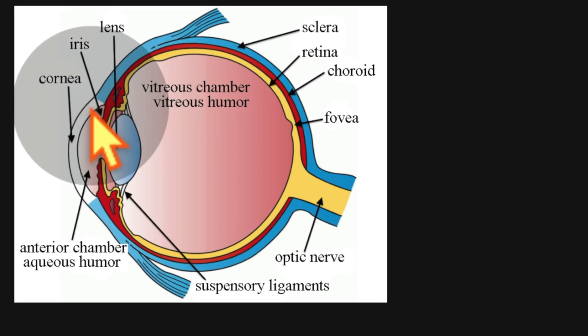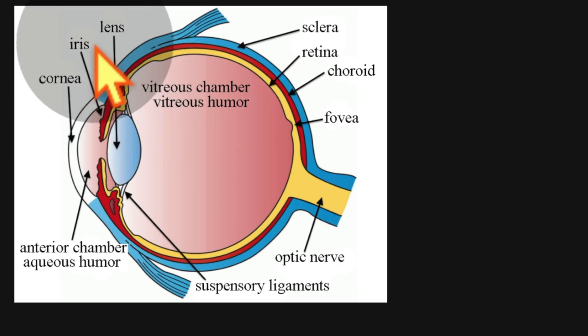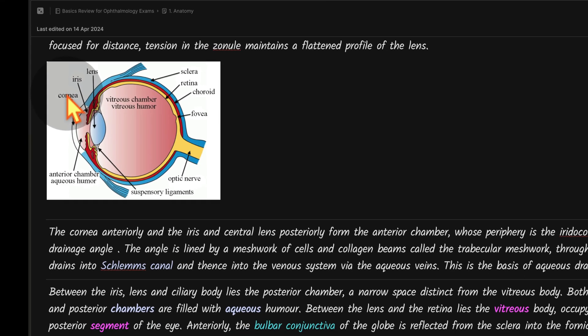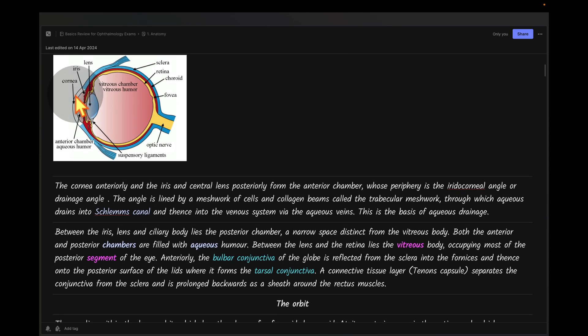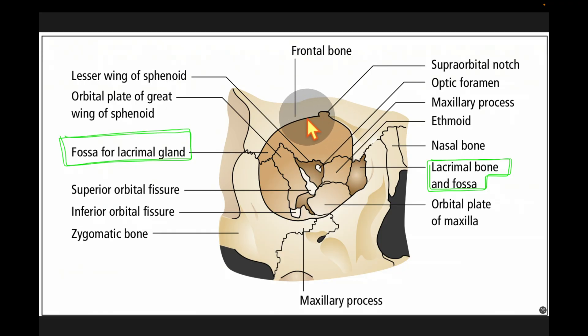The conjunctiva over the globe is called the bulbar conjunctiva. It moves into the fornices, then reflects back from the posterior surface of the lids to form the tarsal conjunctiva, which forms part of the posterior lamella of the eyelid. The tenon capsule is a connective tissue layer that separates the conjunctiva from the sclera and extends backwards as a sheath around the rectus muscles.